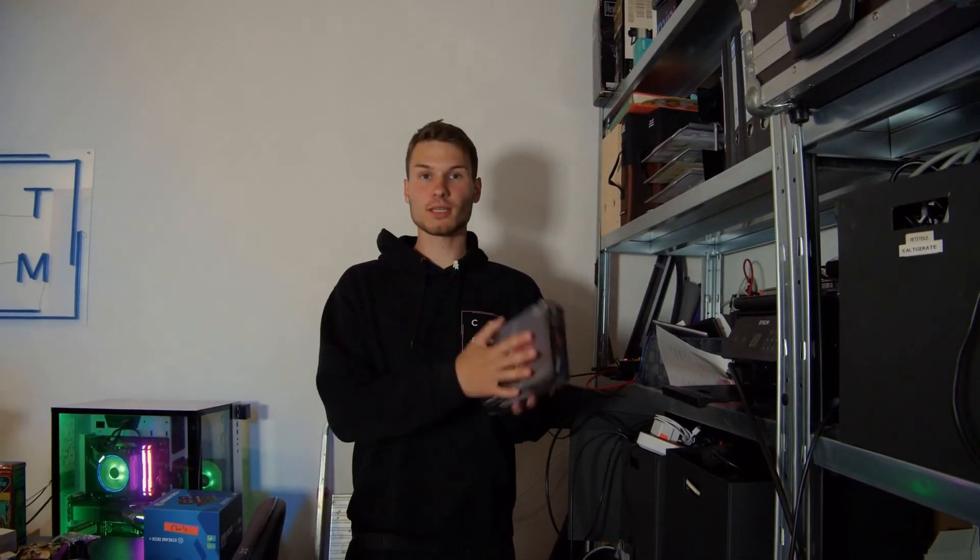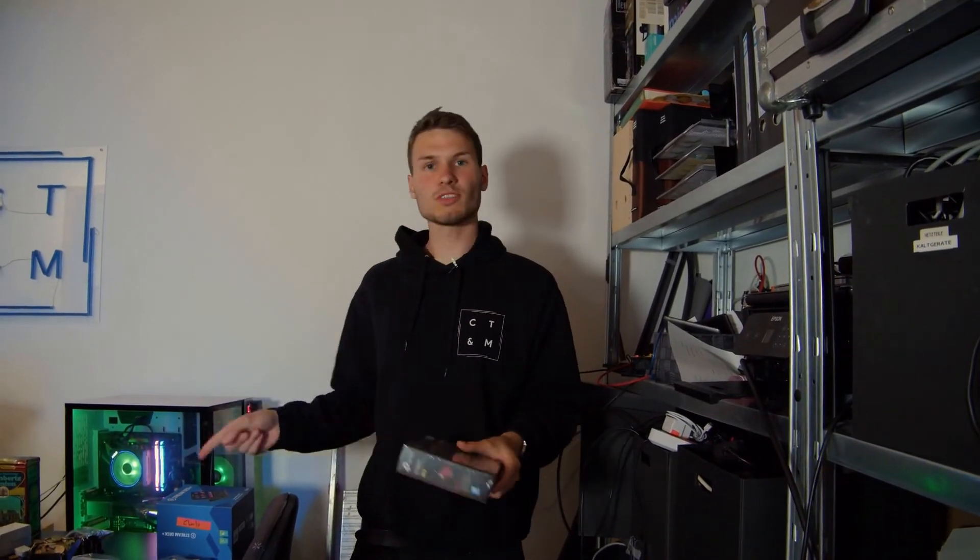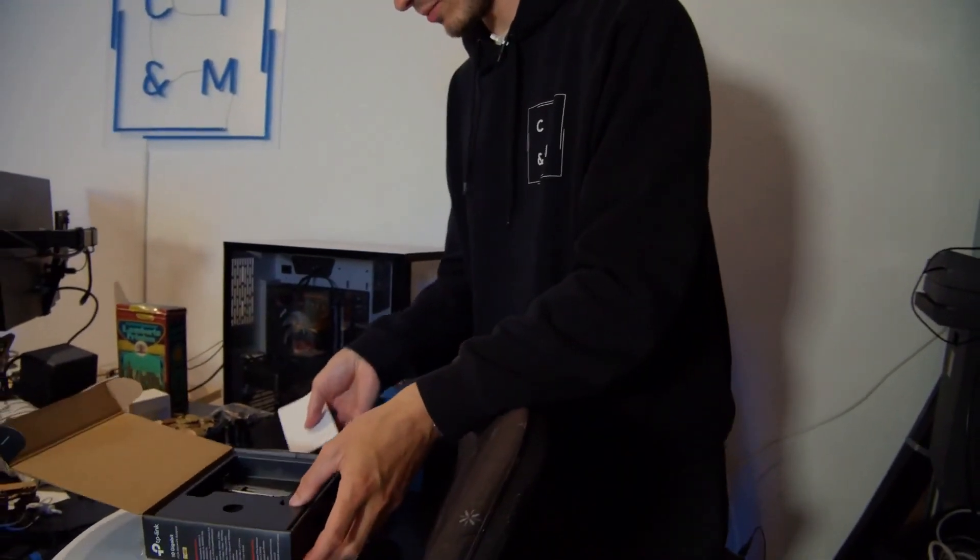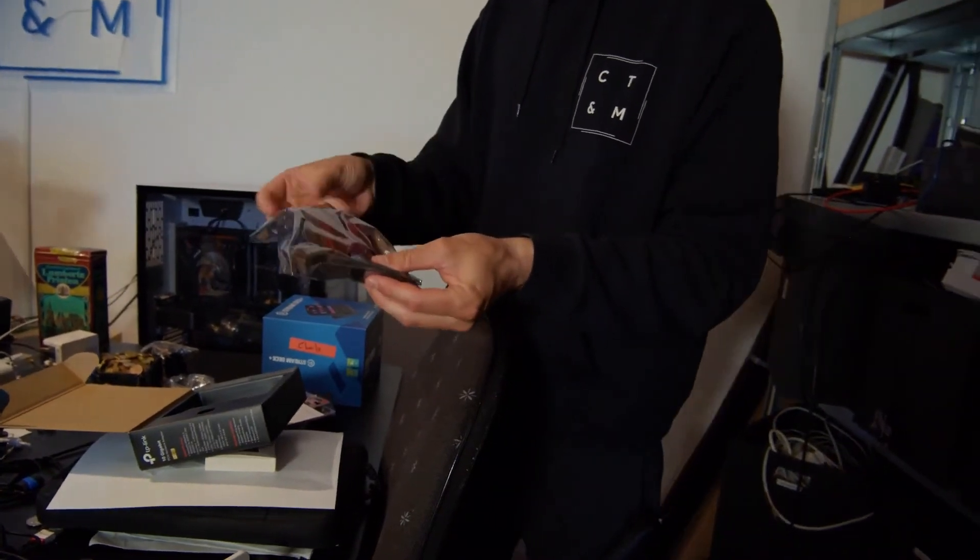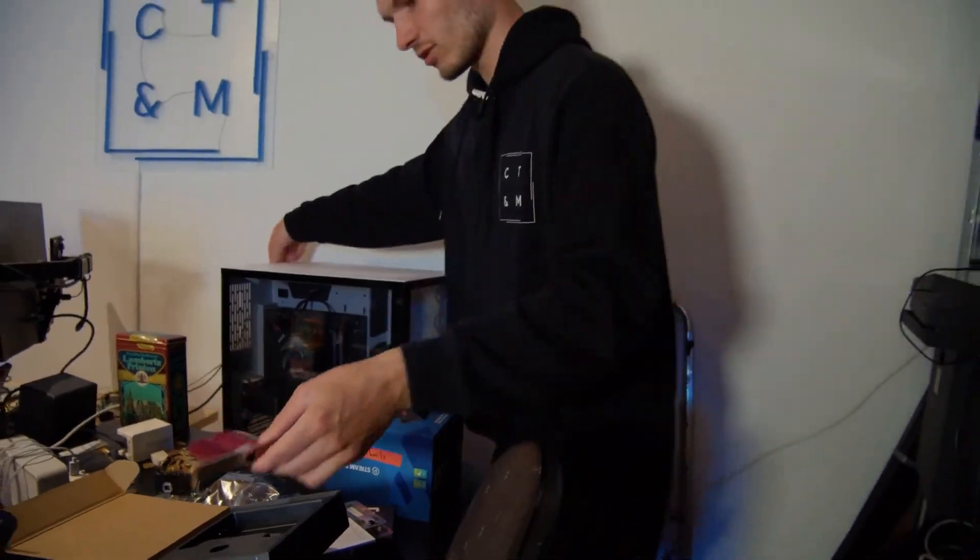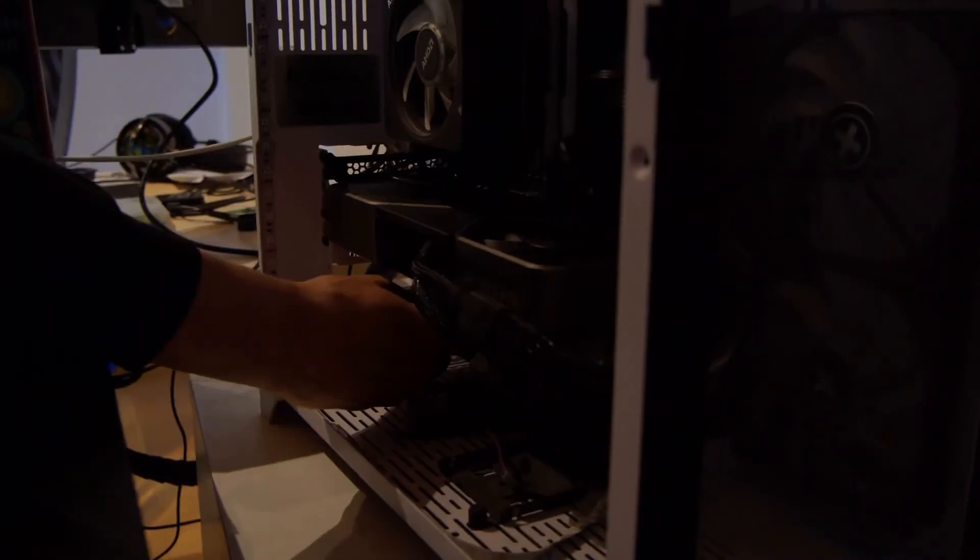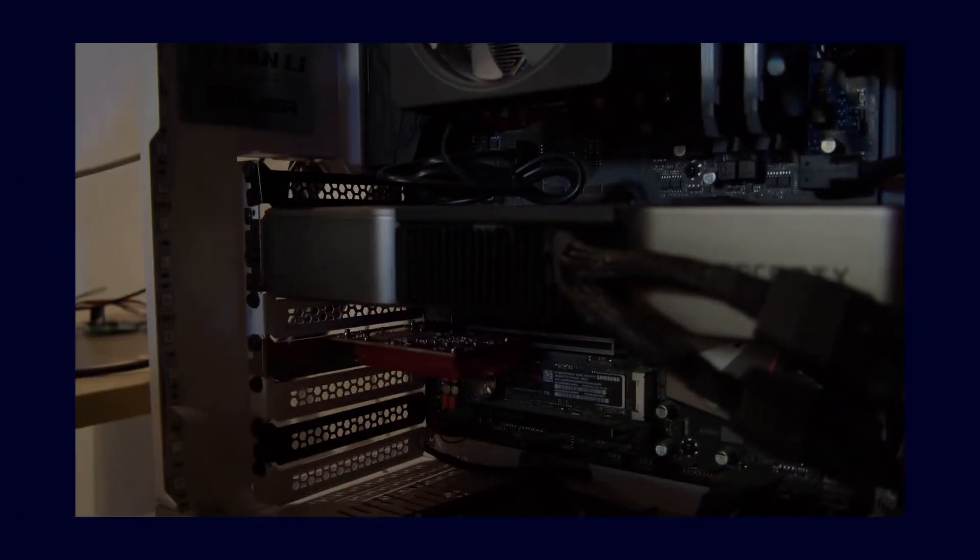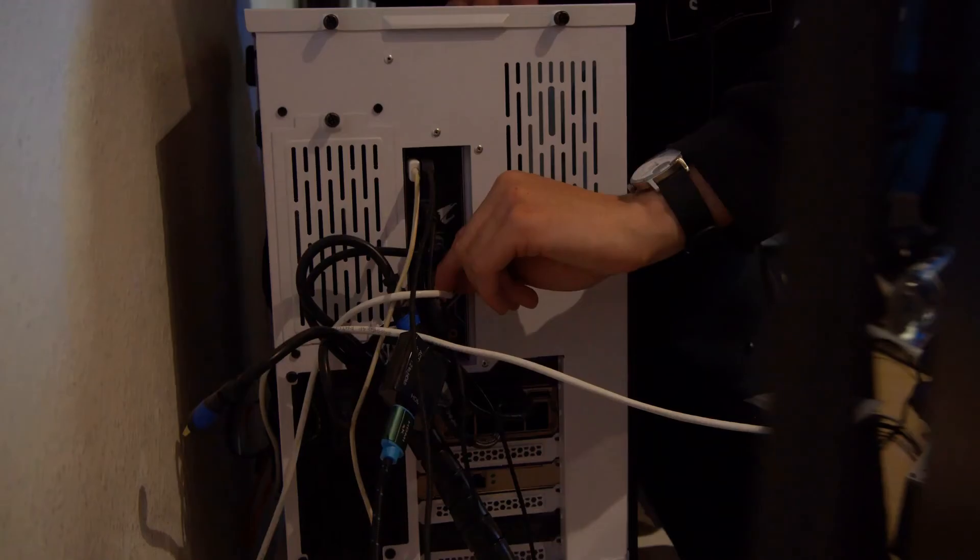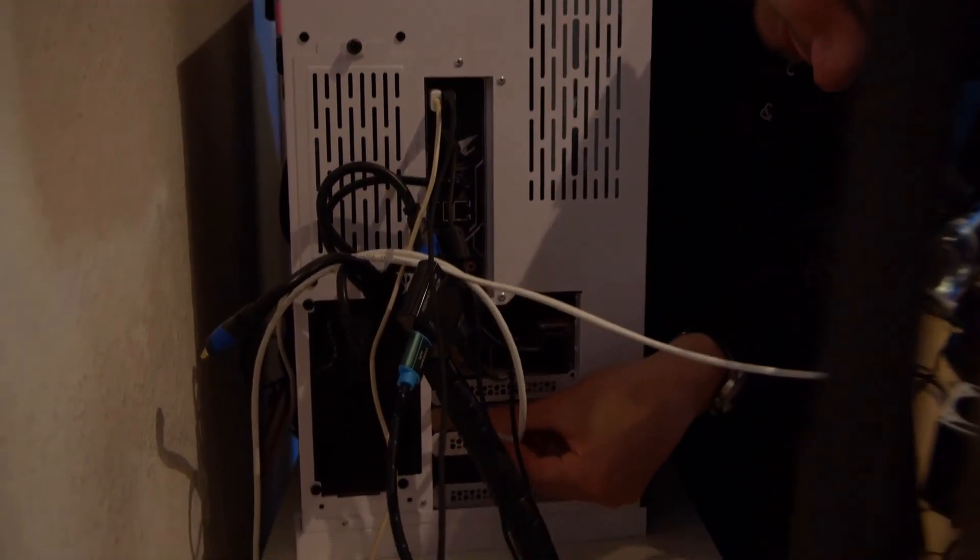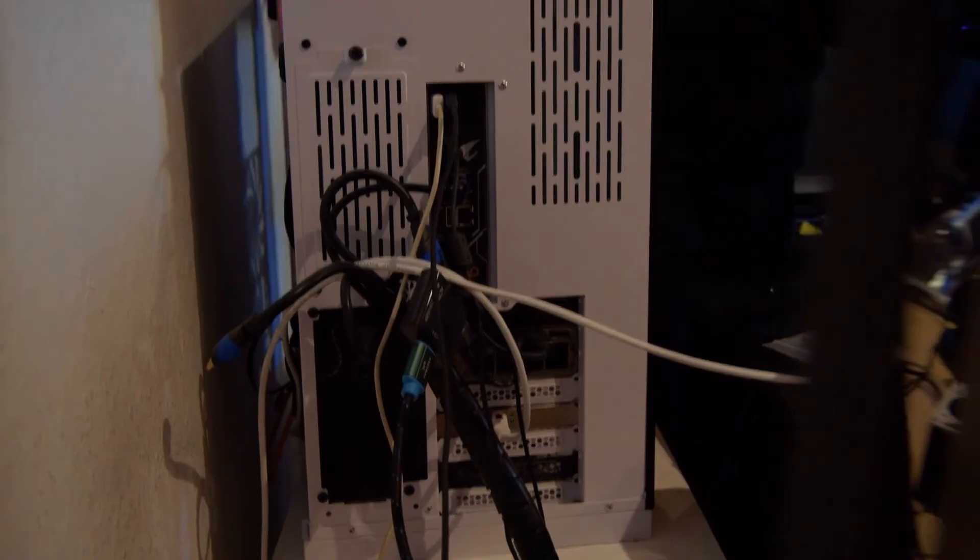And now the 10 gigabit card comes into play, which we need to install in the computer here. For that, I need to turn it off briefly. So, and after that, we can also unpack this part here. This is what the card looks like. And we can now install it here. Now, we close the panels again. And then we just need to plug the connector from up here into the 10 gigabit port down here. And then we can turn the PC back on.